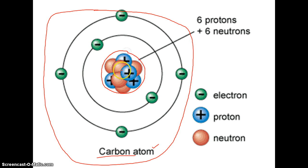You'll see there are two different colored spheres: these red spheres and these blue spheres. The blue spheres have a plus sign — a positive sign — in them, and the red spheres don't have any sign at all. This central part of the atom, which I've circled in red, is known as the atom's nucleus.